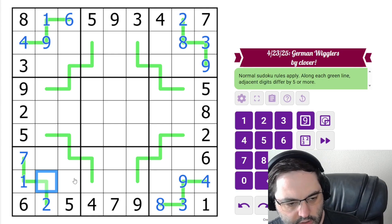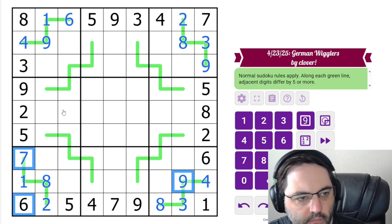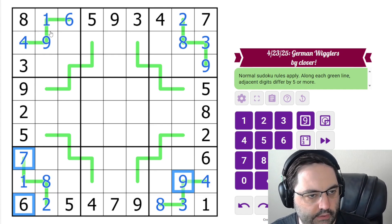We know this must be a high digit. And in fact, the only thing it can be is an 8, because it sees 9, 6, and 7. So that's all the outside lines done.